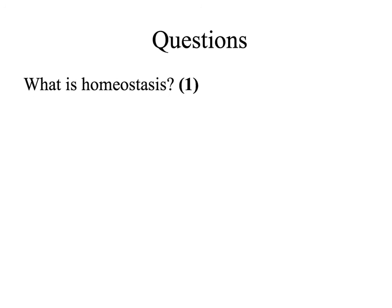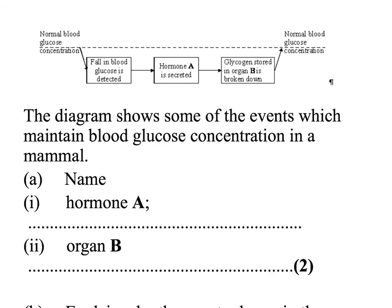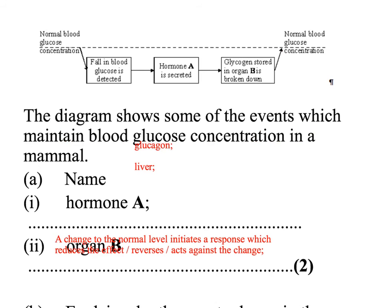Some questions you're likely to get: a simple one — what is homeostasis? A straightforward definition: maintaining a constant internal environment. Another question gives you a feedback loop and asks some detail about it. For example, it shows a fall in blood glucose and asks which hormone is going to be secreted — that should be glucagon — and which organ is acted on by glucagon — the liver. Another part asks you to explain what is meant by a negative feedback loop: a change to the normal level initiates a response which reduces the effect, or reverses, or acts against the change.